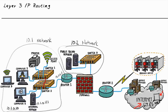Bob can't do the whole thing on his own. He's going to need some help from a network device that can move or route that traffic — in this case, a router, an IP router. He'll also need to know that he has a default gateway or a default router that he can use.